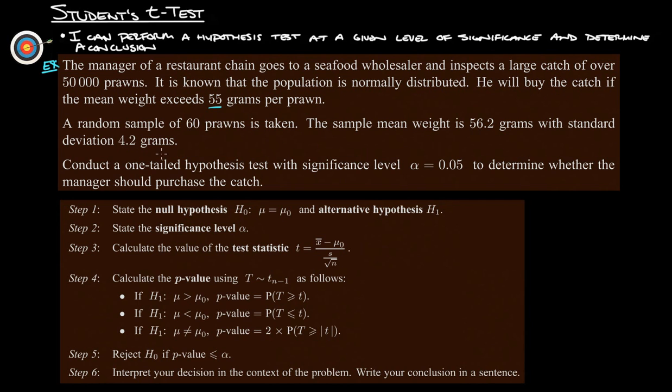We'll conduct a one-tailed hypothesis test, which would be one of these two because this is the two-tailed, with significance level at 0.05, which is five percent, to determine whether the manager should purchase the catch. So step one: null hypothesis.